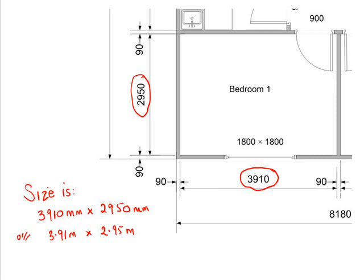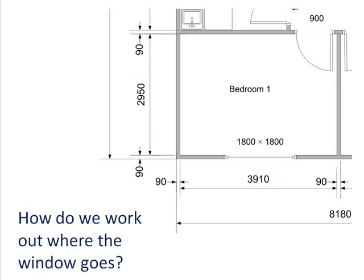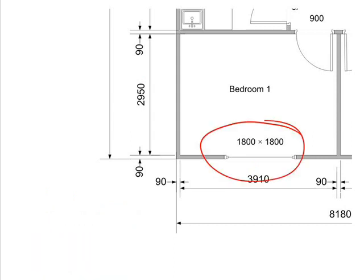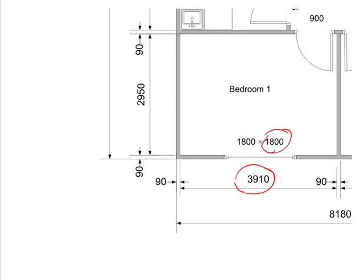The next thing you should be able to do when reading plans is work out where things like windows are going to go. So how do we work out where this goes? The window in this bedroom is 1800 by 1800, written as height first and then width. To work out how far the window is going to come in from the wall, you need to know the width of the room, which is 3910 millimeters, and the width of the window, which is 1800 millimeters.